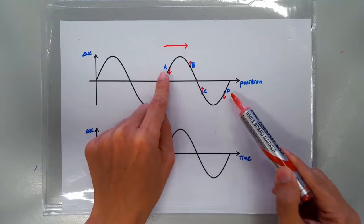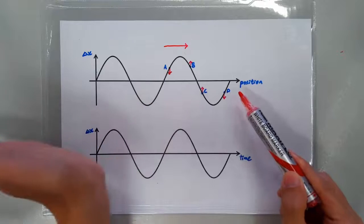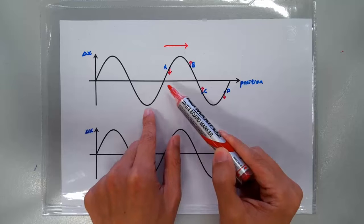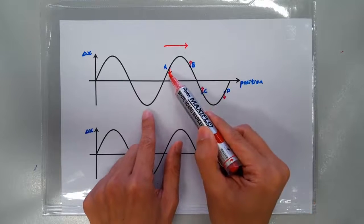Whereas if you are here and here, when you look towards the source of the wave, what you see is a trough coming towards you, and therefore you're on the way down.